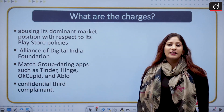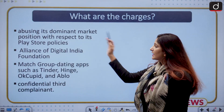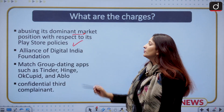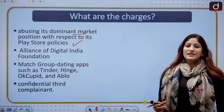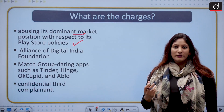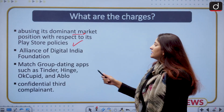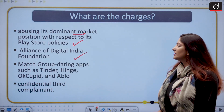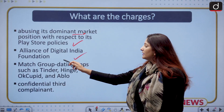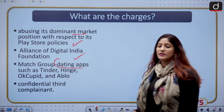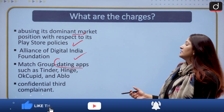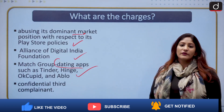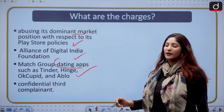Google is also accused of abusing its dominant market position with respect to Play Store policies. CCI was hearing a clutch of three complaints: first, the Alliance of Digital India Foundation, which deals in startups with respect to Digital India; second, Match Group, which produces dating apps such as Tinder, Hinge, OkCupid, and Ablo; and there was a confidential third complainant as well.